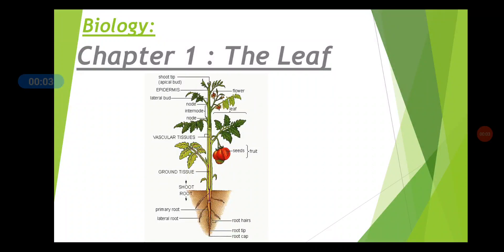Good morning children. Today in this module you will learn about chapter 1 in biology — the leaf. It is not only about the leaf; it is about the flowering plant. You take any plant, the different parts which are present in the plant — there are two systems: the root system and the shoot system. The plant has the shoot system above the soil, whereas the root system is inside the soil.